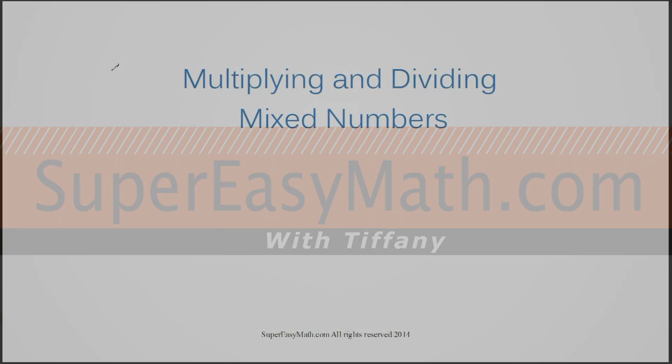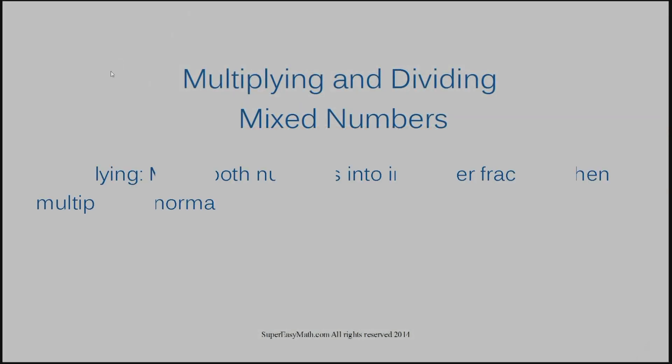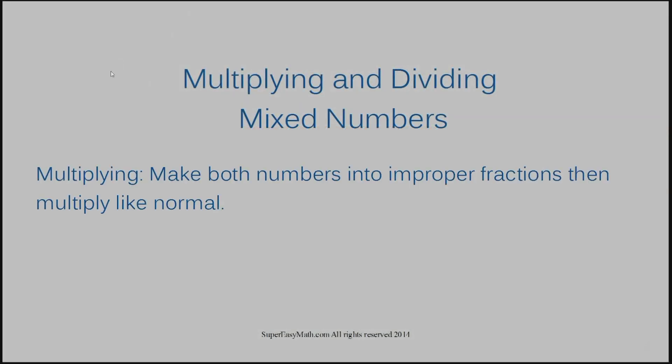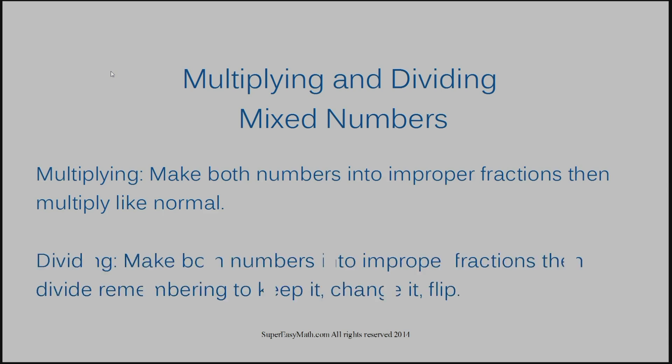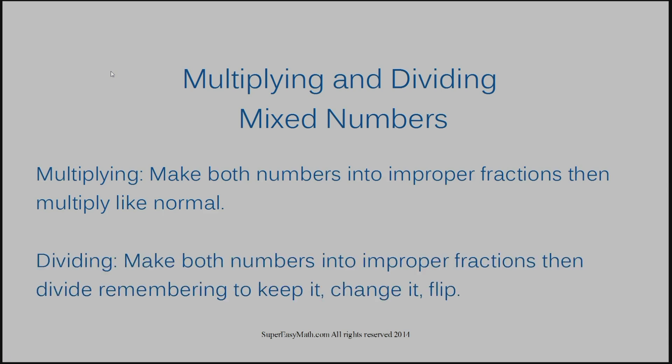When multiplying mixed numbers, you want to make both numbers into improper fractions, then multiply like normal. For dividing mixed numbers, you want to make both numbers into improper fractions, then divide — remembering to keep it, change it, flip it.